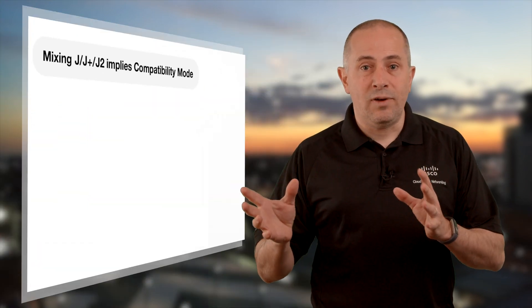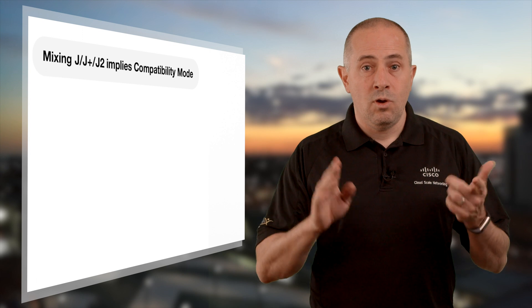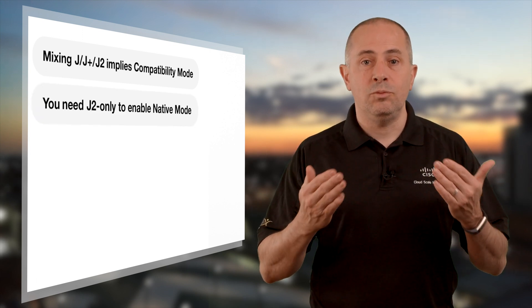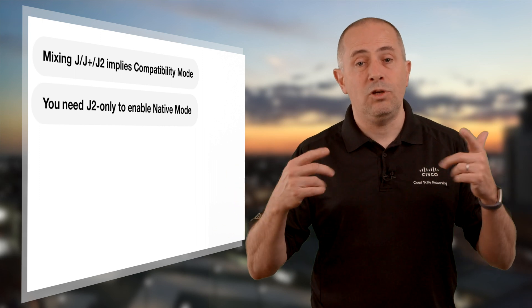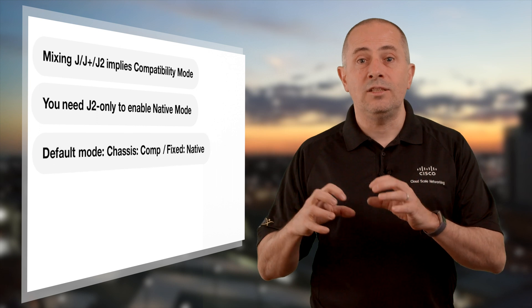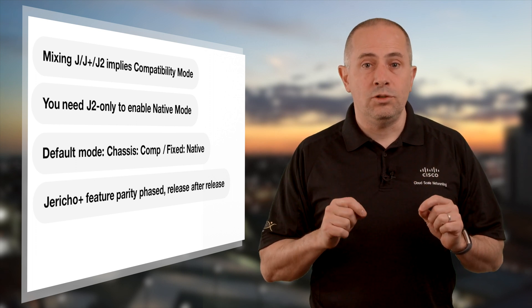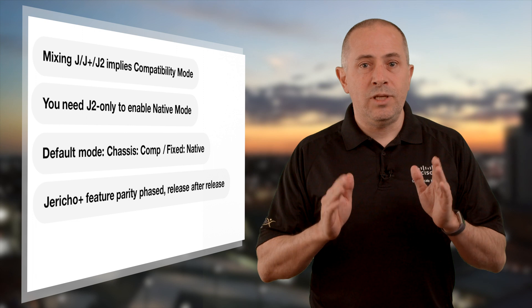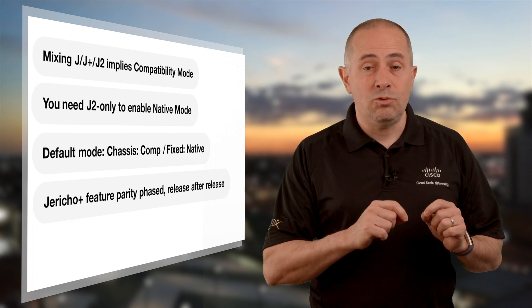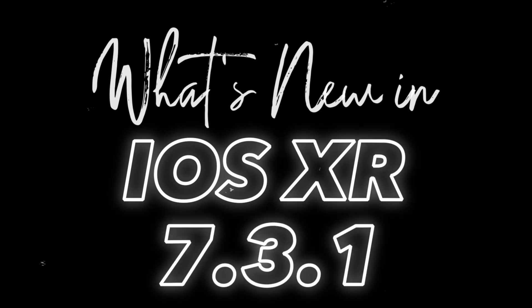Some key takeaways: chassis with a mix of different generations of line cards need to use compatibility mode. When you have only Jericho 2 line cards, you can enable native mode and activate specific features — that requires a reload. Fixed systems powered by Jericho 2 run native mode by default. Depending on the software release and operation mode, not all features are supported day one, so my best advice is to contact and discuss with your account teams about the services you need to activate and make sure there are no gaps. In the next videos coming very soon, we'll make a refresh on memory utilization and present all new features and products introduced in IOS XR 7.3.1. See you in the next one — and in the meantime, prenez bien soin de vous.